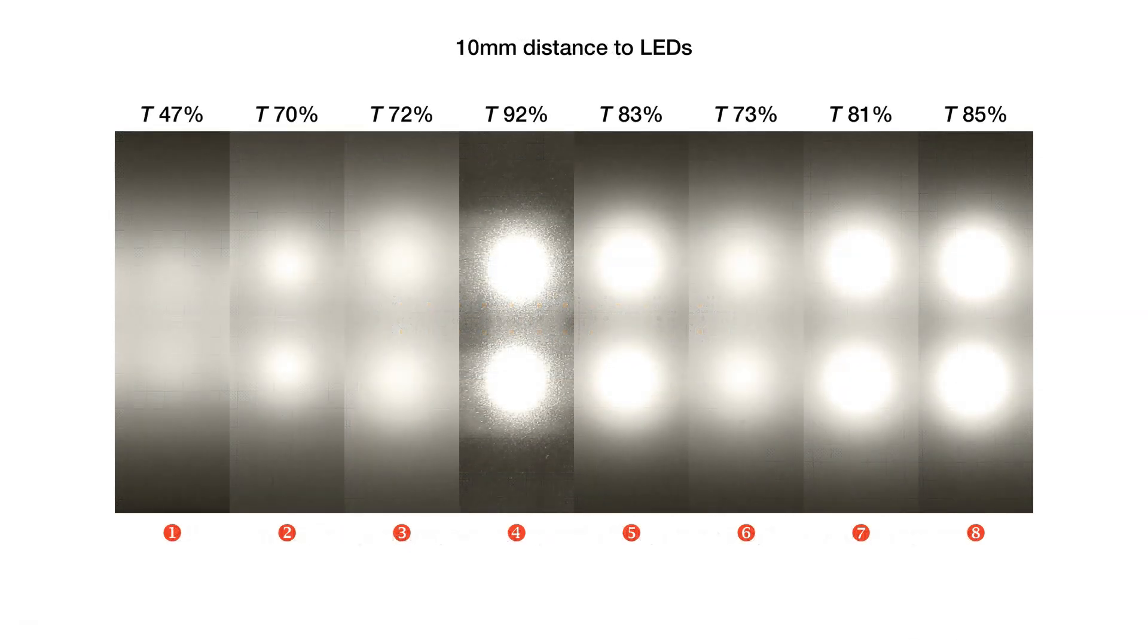At a distance of only 10 mm, you see bright hotspots right away. Only material 1 achieves some diffusion at such a close distance. But with only 47% transmission, the inefficiency is nearly as bad as with milk or opalescent glass.